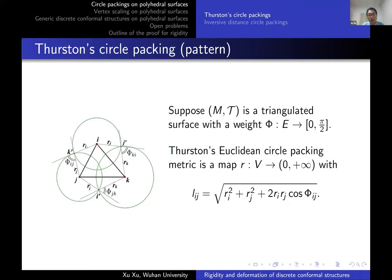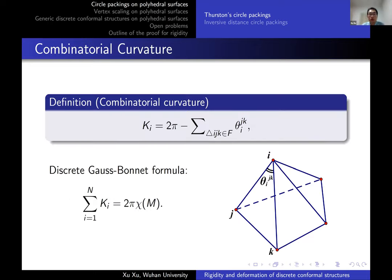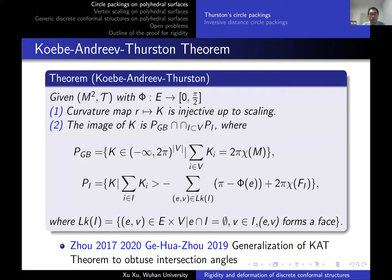For a triangle IJK, the lengths L_IJ, L_IK, L_JK satisfy the triangle inequality, so we can attach a Euclidean structure by gluing Euclidean triangles isometrically along edges, obtaining a surface with cone singularities. To describe the singularities, we introduce the combinatorial curvature K, defined as 2π minus the cone angle at vertex i. It satisfies the discrete Gauss-Bonnet formula.